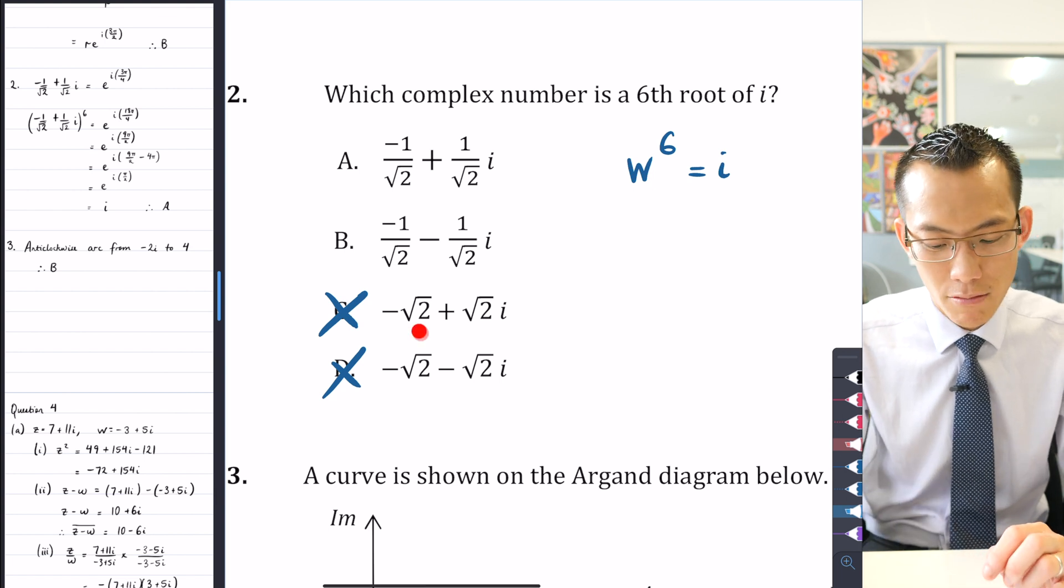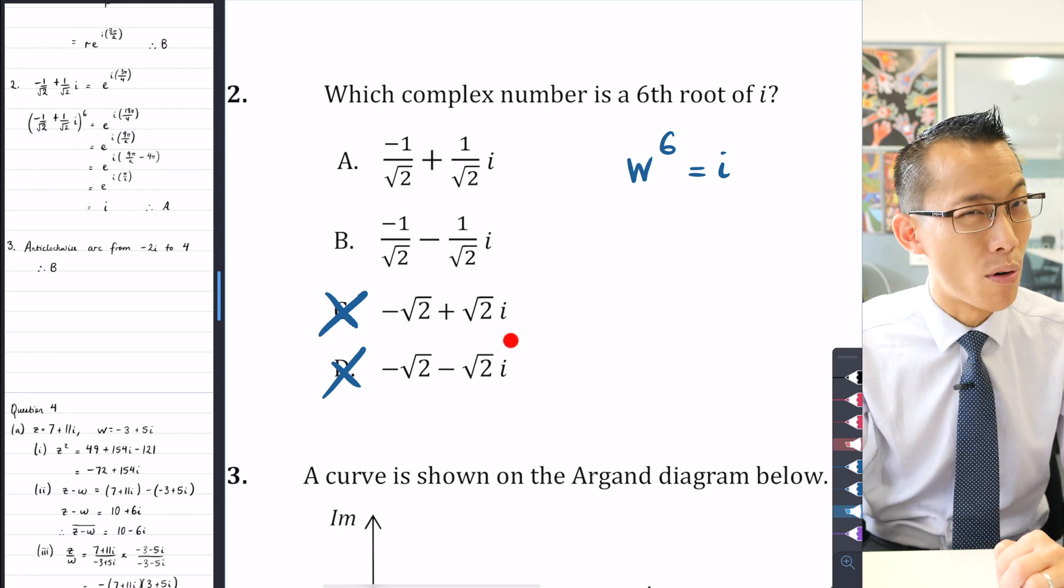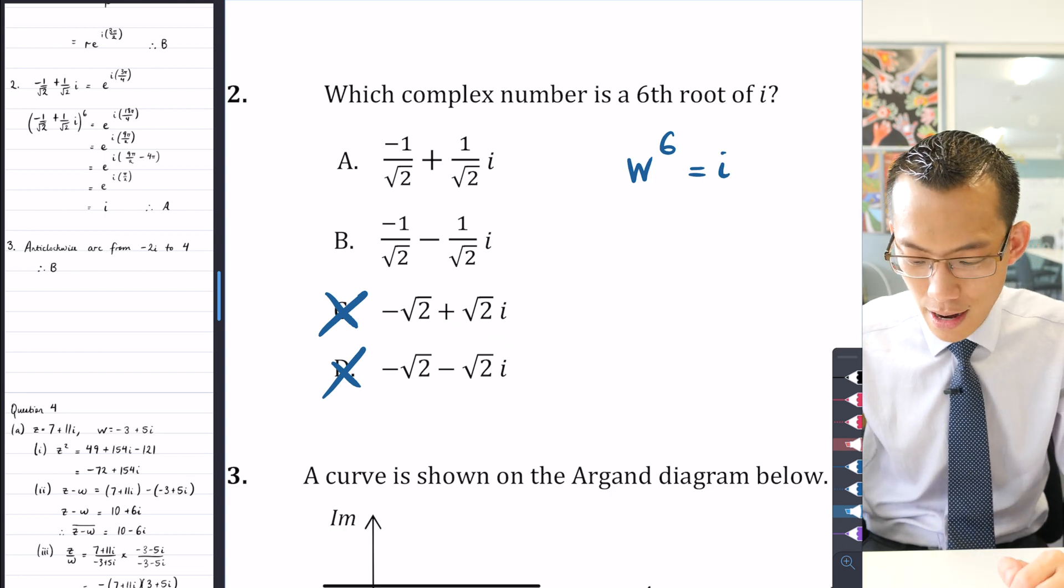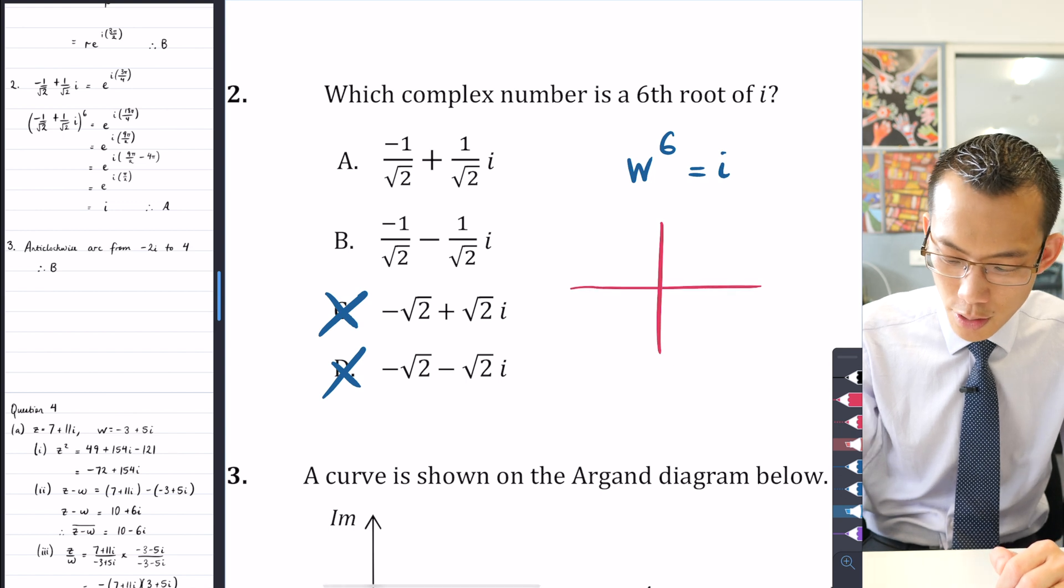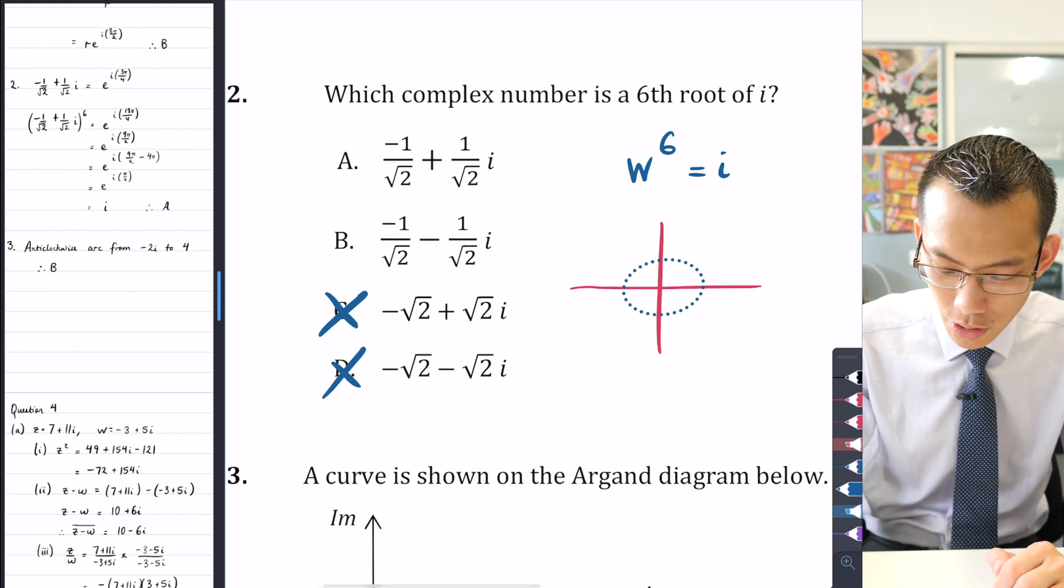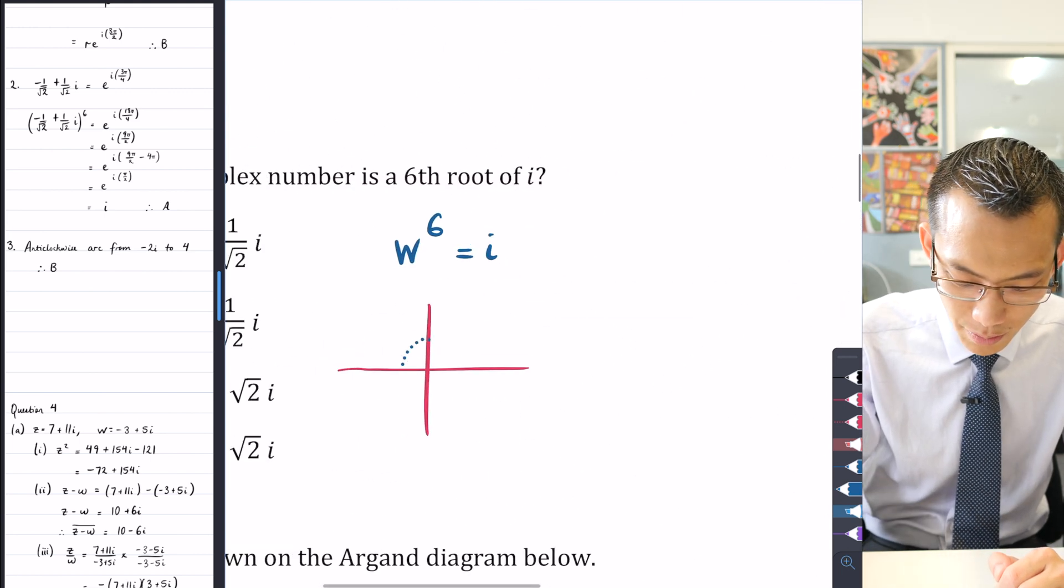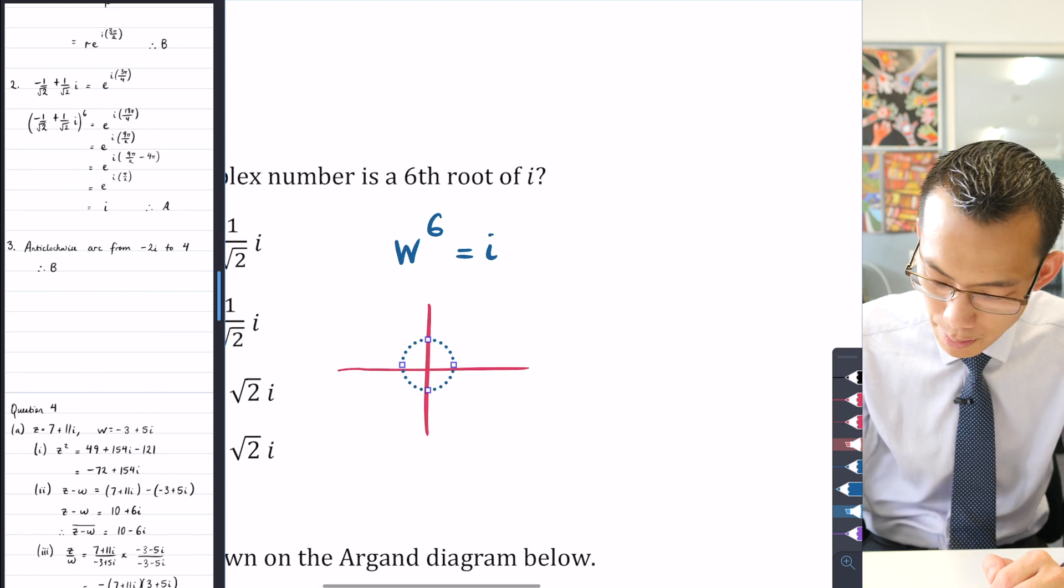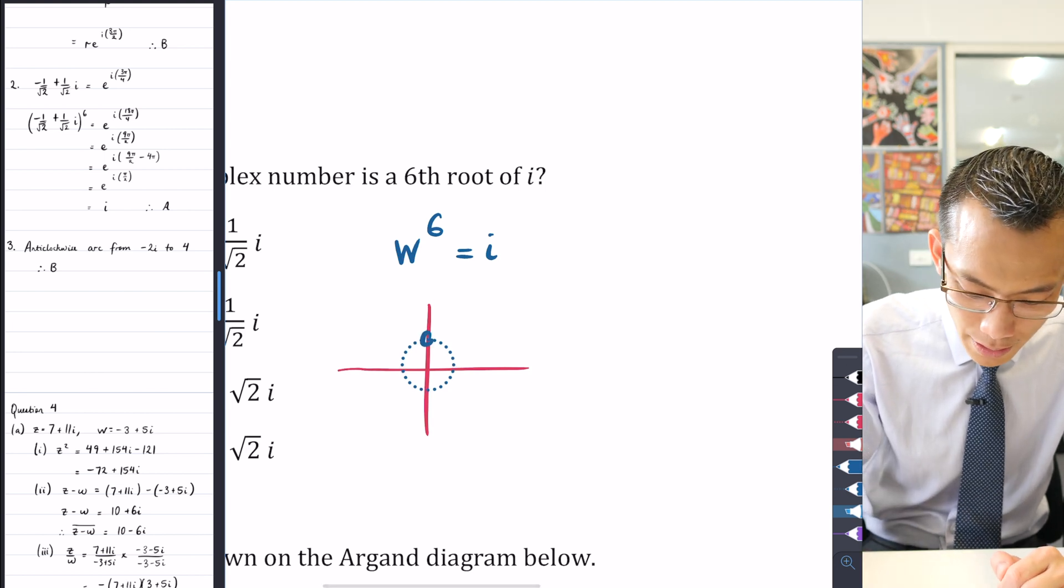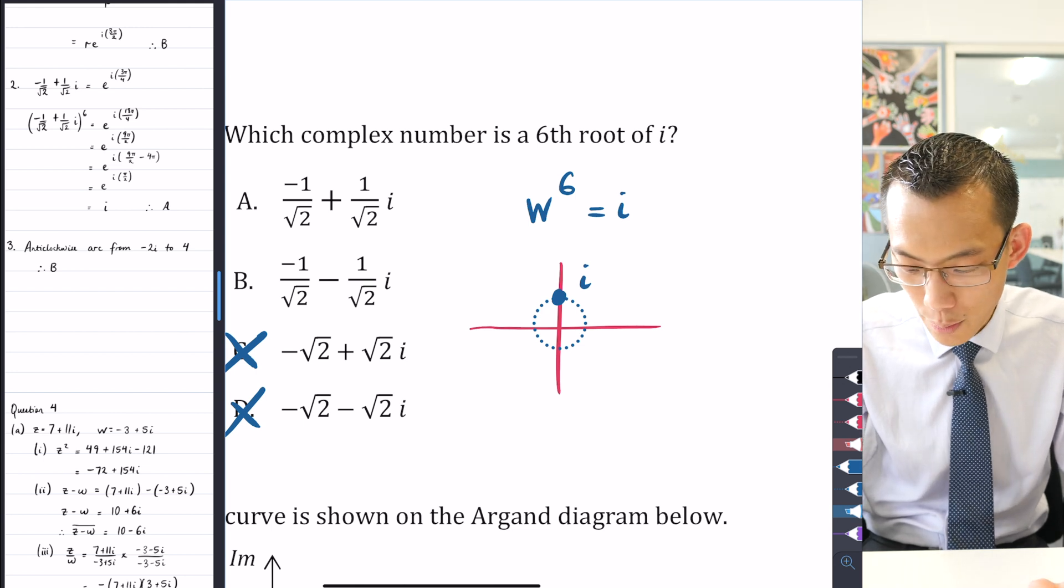Since I know that i is actually on the unit circle, that tells me that these two options here, C and D, are immediately irrelevant. Because √2 is about 1.4, so this is -1.4 + 1.4i. Where would that be on an Argand diagram? If I draw a very rough Argand diagram here and put a unit circle on here, if we place i here, where would -1.4 + 1.4i sit? 1.4 is about that far and that far, so I'm guessing it'll be somewhere up here.